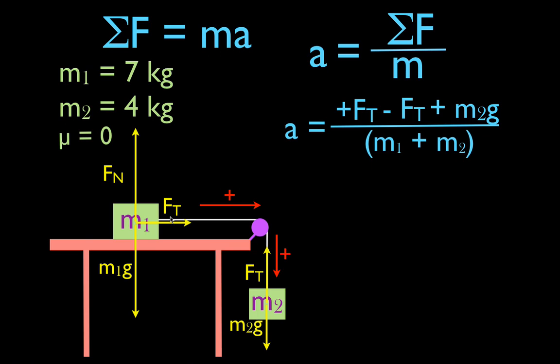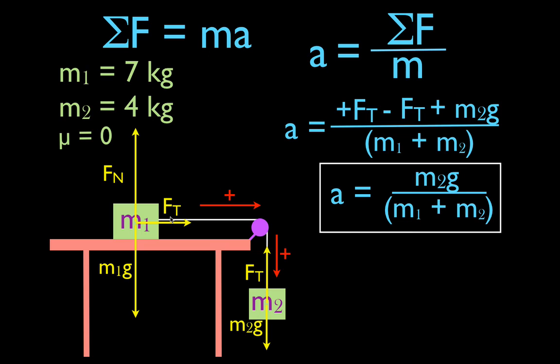You'll notice we have plus Ft and minus Ft. Because we have an inelastic string, those two forces are equal in magnitude and opposite in direction, so they cancel each other out. When we reduce the equation, we get acceleration equals m2g divided by (m1 plus m2). That tells us this is the equation we use to calculate the acceleration. Only one force — m2g, the weight of m2 — affects the acceleration of the two-object system.